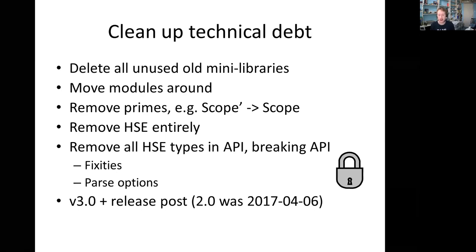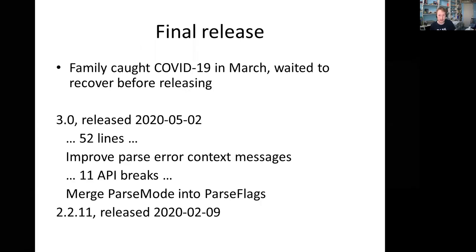We got the 3.0 release ready, wrote a release post, and were just waiting to press the button. We suspected a bunch of things we hadn't thought about would break. Then my family all caught COVID in March — don't catch COVID, it's no fun. It took quite a while to recover. We decided to wait until we were at full strength. The last release before 3.0 was in February, and three months later in May we released 3.0, with 52 changes in the changelog and 11 API breaks.